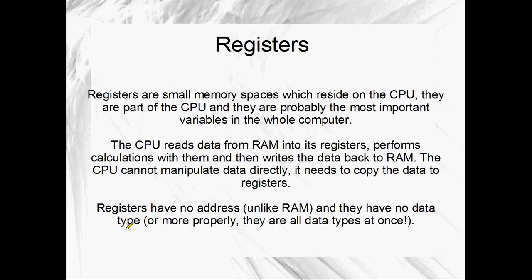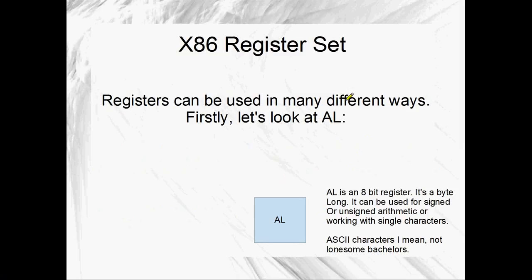Registers also don't have a data type - more properly, they're all data types at once. They're very cool and one of the coolest things about assembly, to be honest.